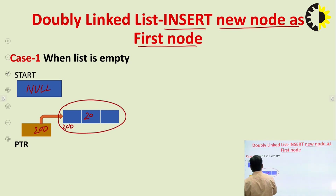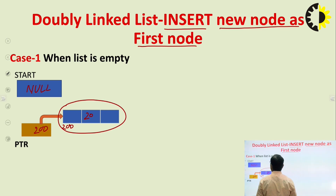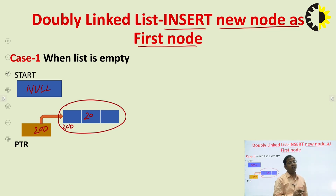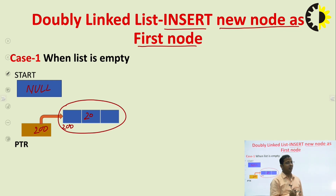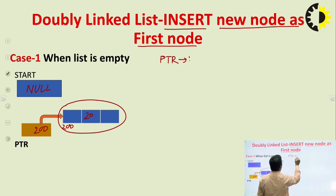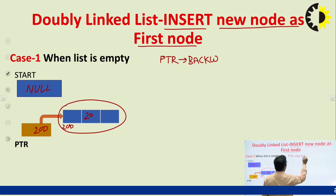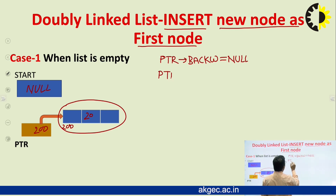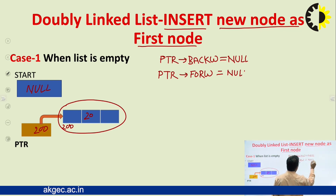We allocate the memory and the address of that allocated node will be stored in the PTR pointer. When the list is empty and we insert a node as a first node, that node is both the first node and the last node. In that case, the new node's backward field will contain null.